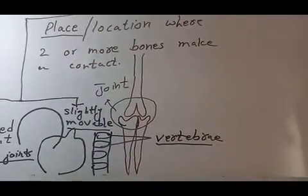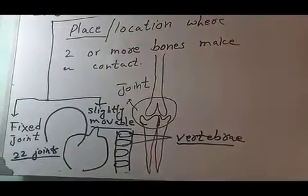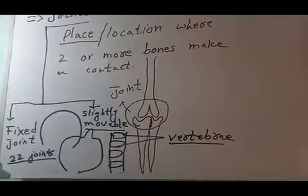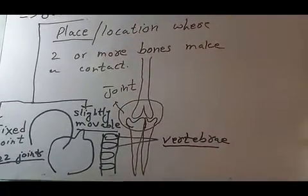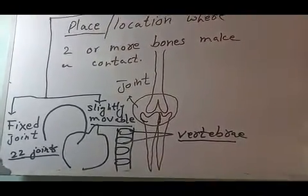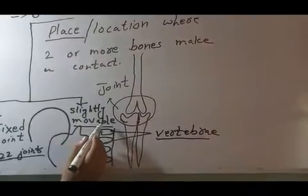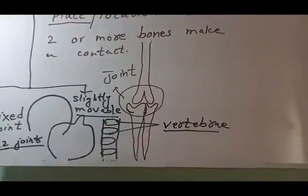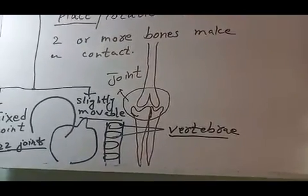The joints present between the vertebrae are slightly movable joints, meaning they allow very little movement. You can bend yourself forward or backward because of these slightly movable joints. However, you cannot suddenly move your backbone hard forward or backward — that would result in the breakage of the backbone. Note that the spelling of movable can be written as m-o-v-a-b-l-e or m-o-v-e-a-b-l-e, the latter being the American spelling.